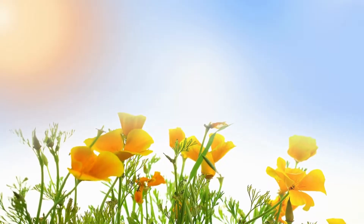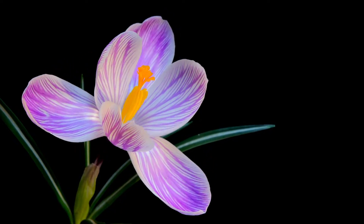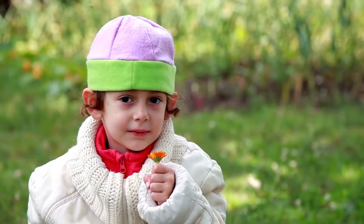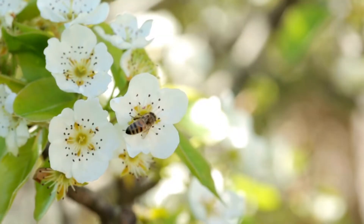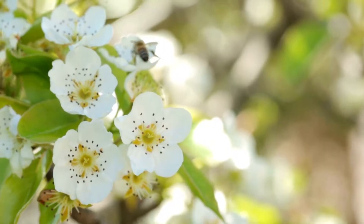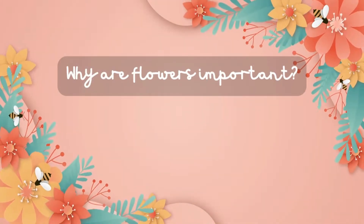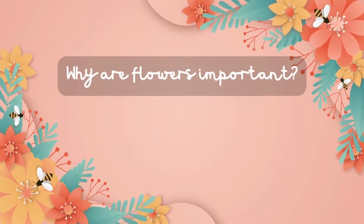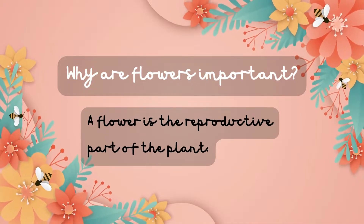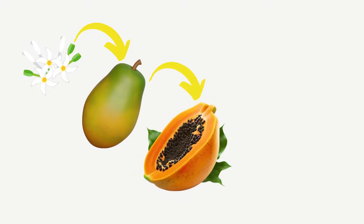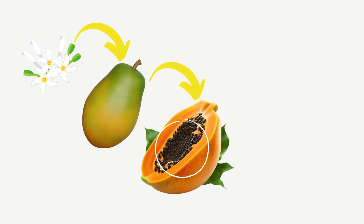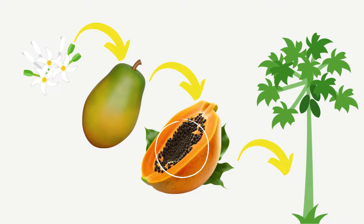You must have seen flowers on most plants. Flowers are colorful and attractive. They may also have fragrance. These beautiful flowers attract animals and insects towards the plant. Why are flowers important? Well, a flower is the reproductive part of the plant, which means it produces fruits, and fruits have seeds. Seeds when sown produce new plants. Thus, flowers are responsible for the production of new plants.